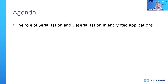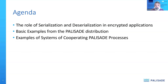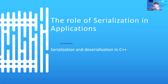The agenda for this talk covers three related topics. First is the role of serialization and deserialization in encrypted applications, focusing primarily from the C++ perspective because Palisade is written in C++. Then I'll provide a list of basic examples from the Palisade distribution, and present a more complicated example of two cooperating Palisade processes.